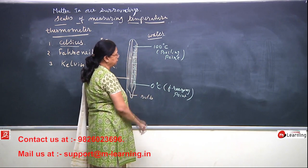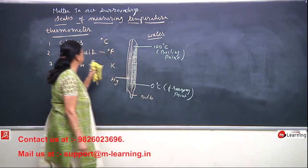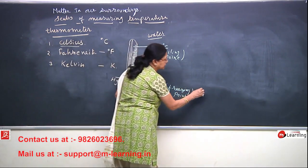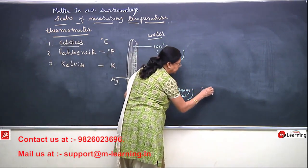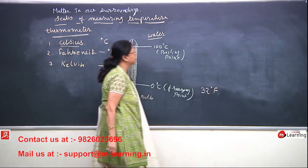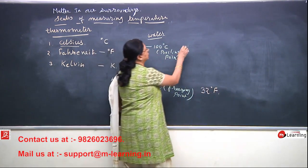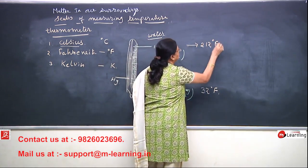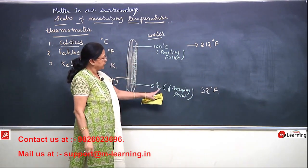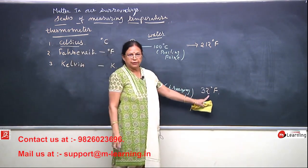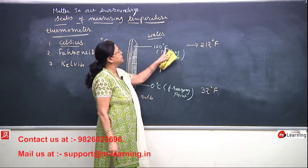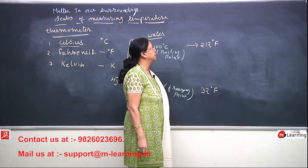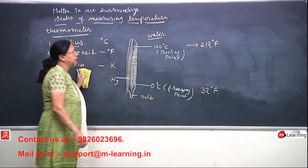Now if we take it in a different scale, that is Fahrenheit, then 0 degree Celsius will coincide with 32 degree Fahrenheit, and 100 degree Celsius will coincide with 212 degree Fahrenheit. This is another scale. The third scale is Kelvin.